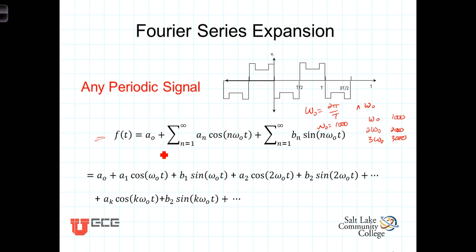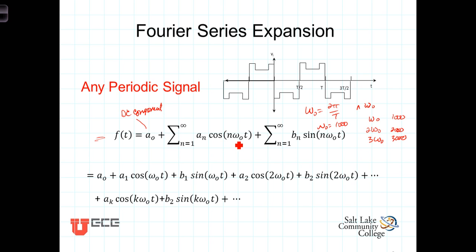Mathematically, we write this infinite sum in the form where the time domain function f(t) equals some constant a0 — the DC component — plus an infinite sum from n equals 1 to infinity of a_n cosine(nω0 t), plus an infinite sum from n equals 1 to infinity of b_n sine(nω0 t). For n equals 1, you have a1 cosine(ω0 t) plus b1 sine(ω0 t); for n equals 2, a2 cosine(2ω0 t) plus b2 sine(2ω0 t), and so on.